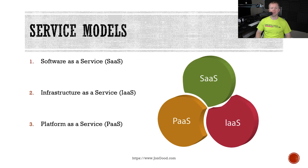Now we're going to transition to the different service models that you can use in the cloud. When you think of service models, this is the 'how' that we're going to provide our services. The three different service models that you need to be aware of are on the screen here: software as a service, infrastructure as a service, and platform as a service.